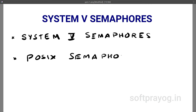System 5 semaphore calls are complicated, and that is an understatement. So our approach is to understand the System 5 semaphore calls as they are but use them in a way that simplifies programming. We will try to program P and V operations using the System 5 semaphore calls and then use P and V operators in our programs.